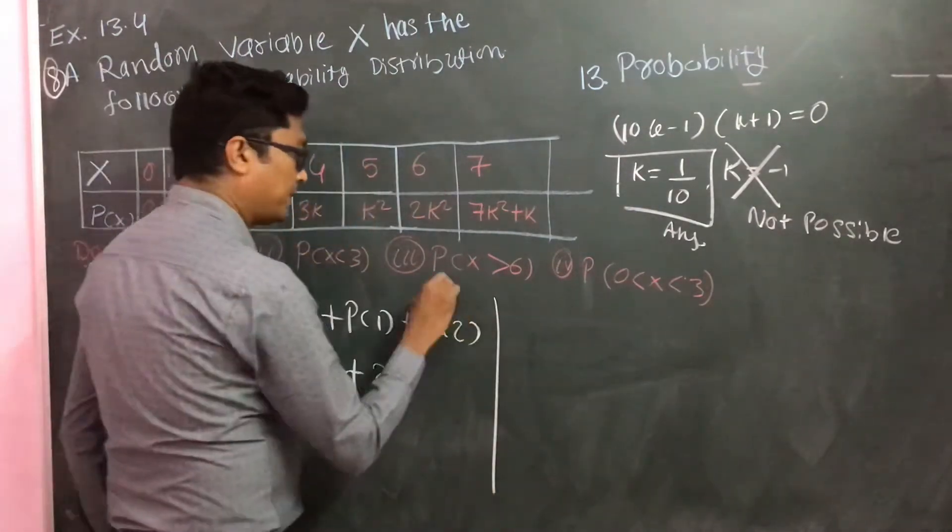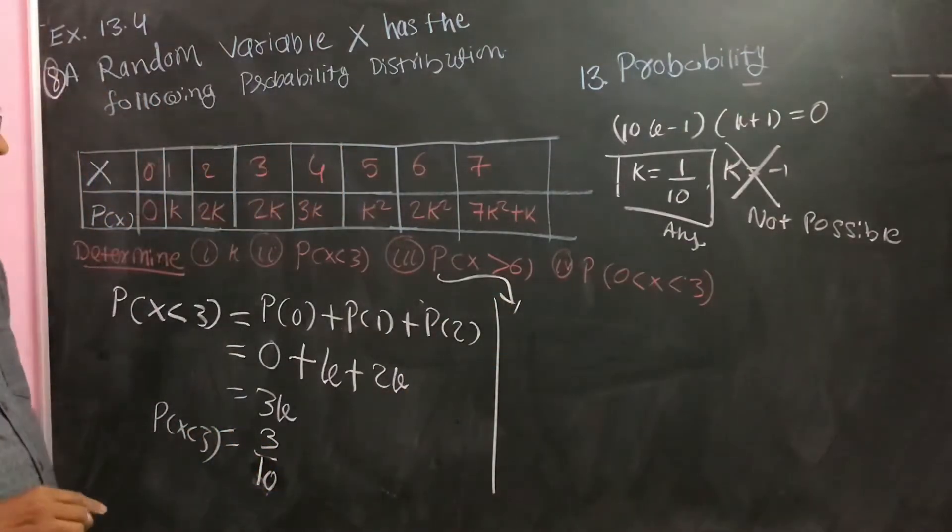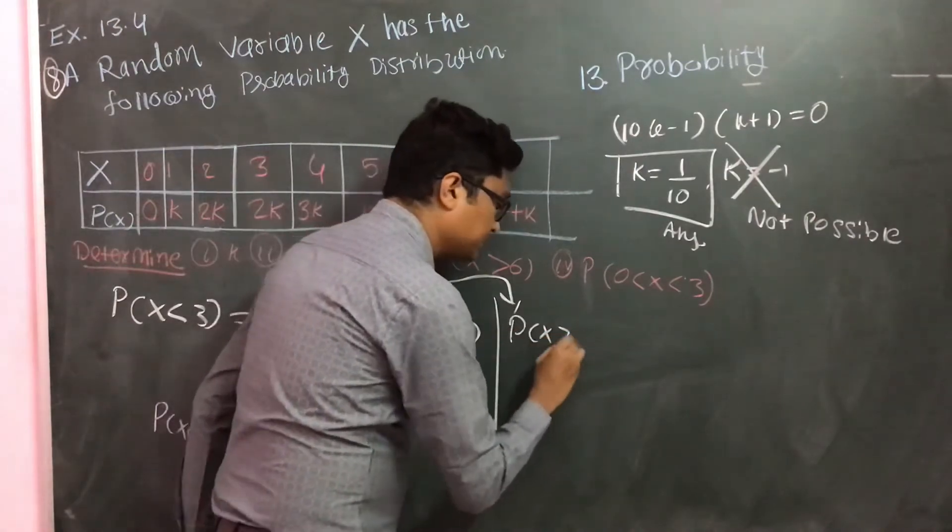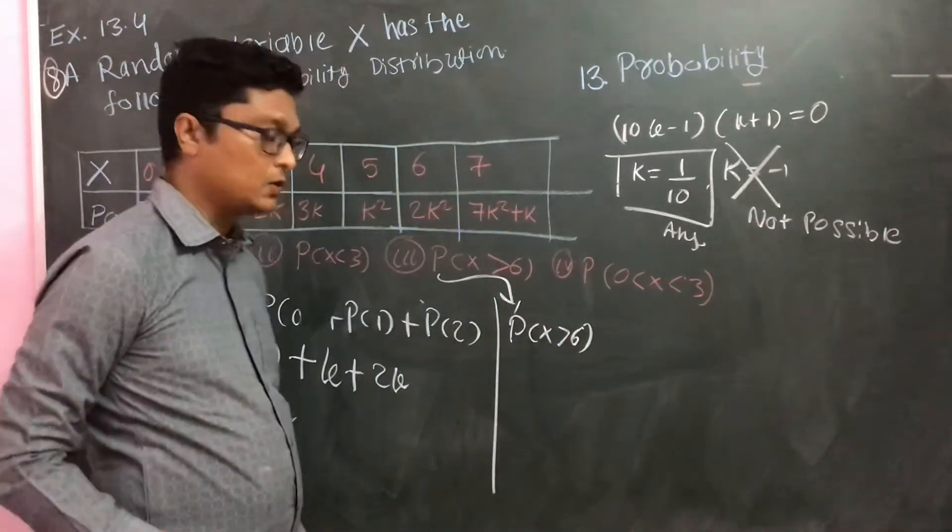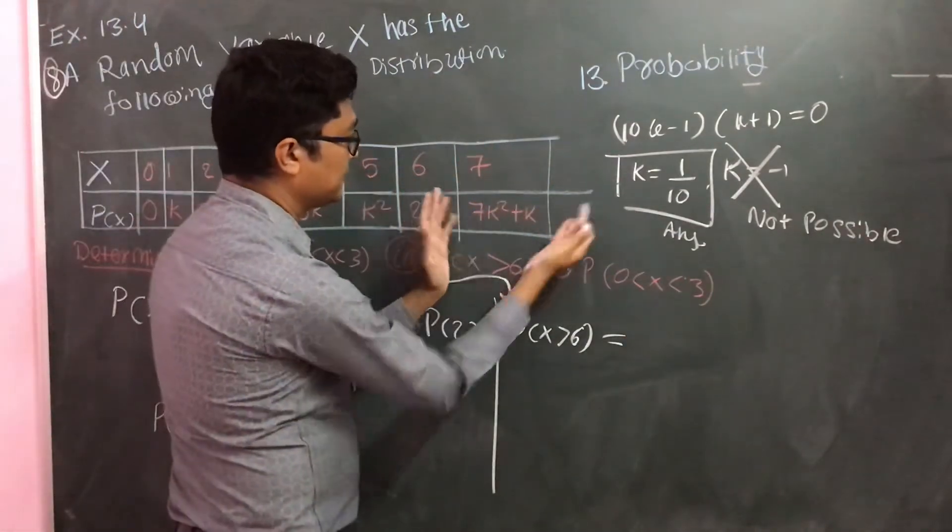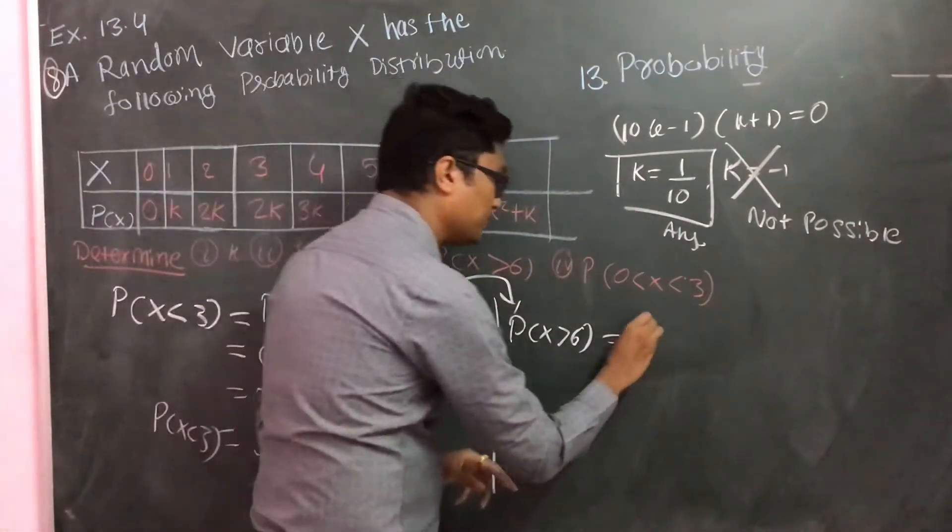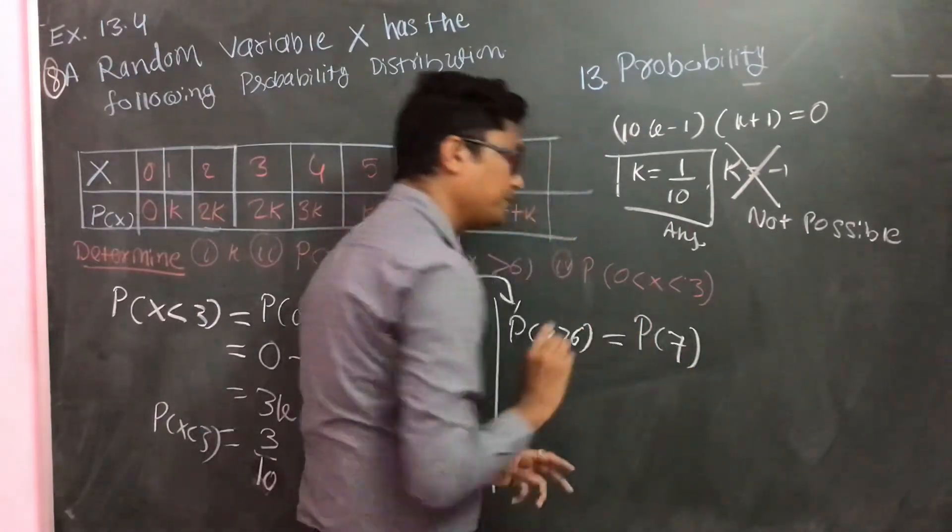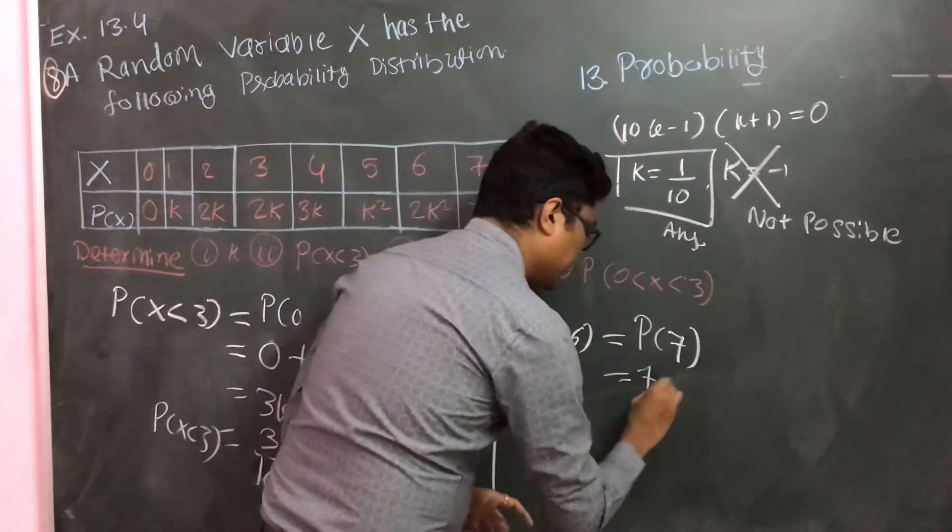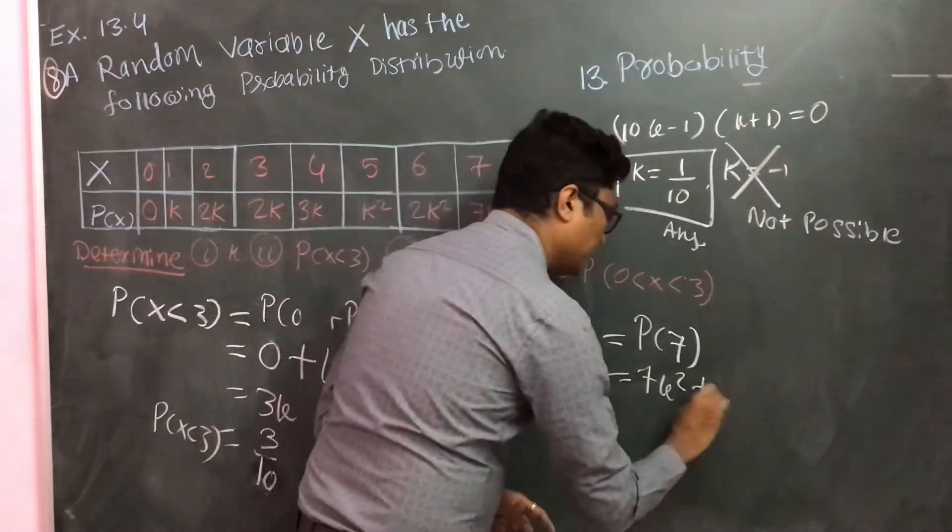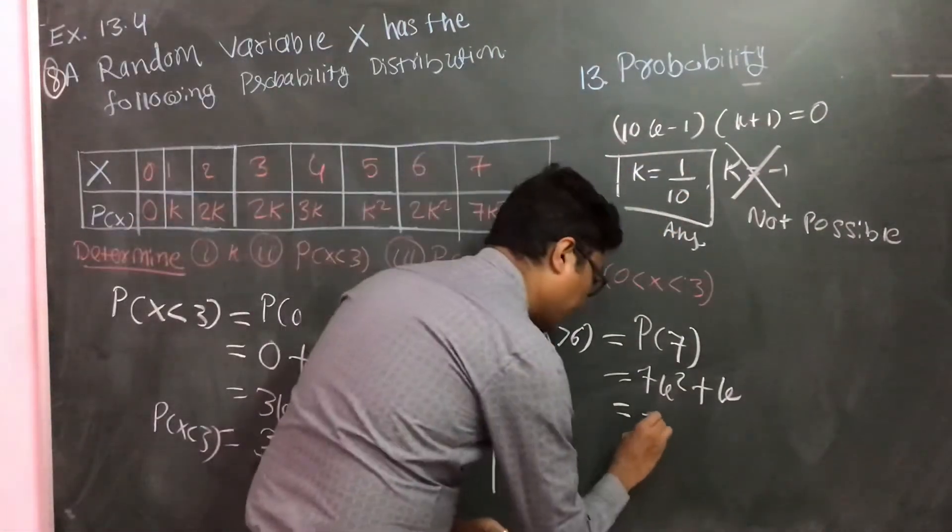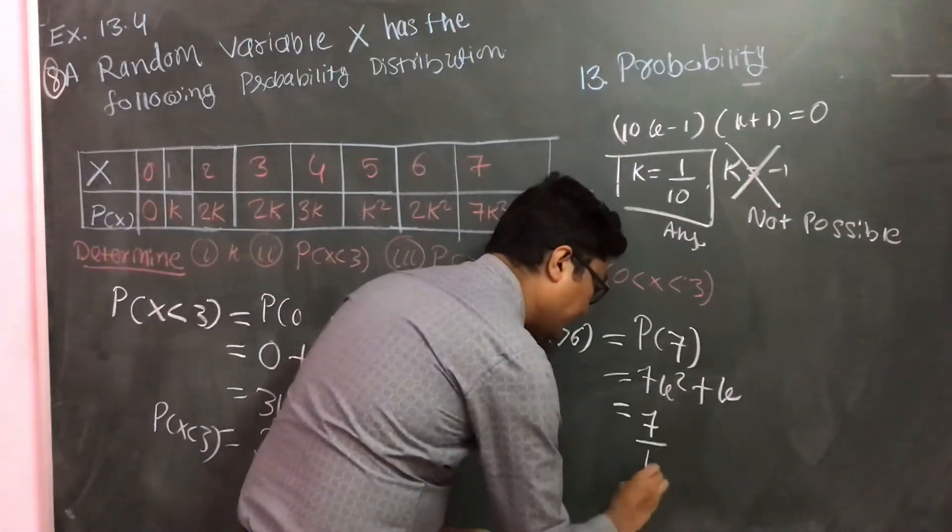Third part is P of X greater than 6. Here you can see that the only possibility is P of 7. P of 7 is 7k square plus k. Of course, the value of k is 1 by 10.